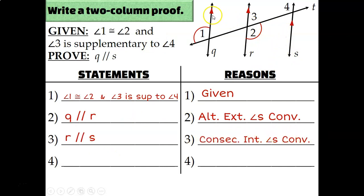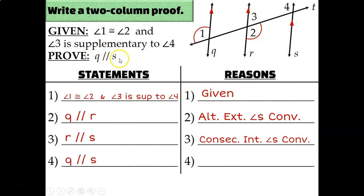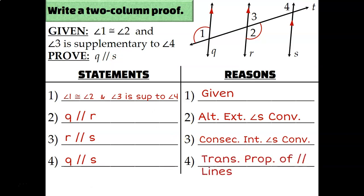Now I see on my diagram that all three of these lines are marked as parallel to each other. So I can write my final proof statement that Q must be parallel to S, and my reason is the transitive property of parallel lines.